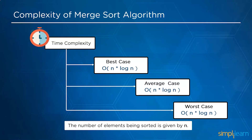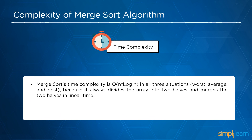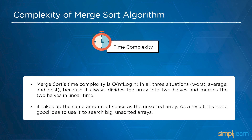The best case of merge sort algorithm is O(n log n). The average case is also O(n log n). Merge sort time complexity is O(n log n) in all three situations — worst, average and best — because it always divides the array into two halves and merges the two halves in linear time.